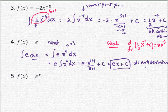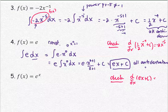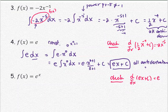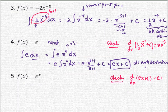To check the answer, the derivative of ex plus C is e times 1 plus 0, which equals e — the same as the integrand.